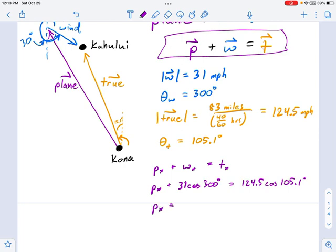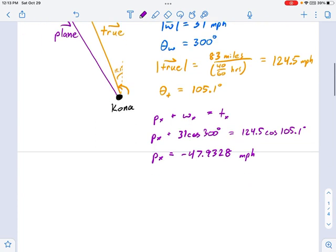Now all we have to do is solve for Px, and we're good. I think this is a pretty simple calculator job. If you punch this in, remember we're in degrees here, we're not in radians. You're going to get Px equals negative 47.9328, and that's in units of miles per hour. So the plane has to be traveling to the left. We kind of knew that already from the picture.